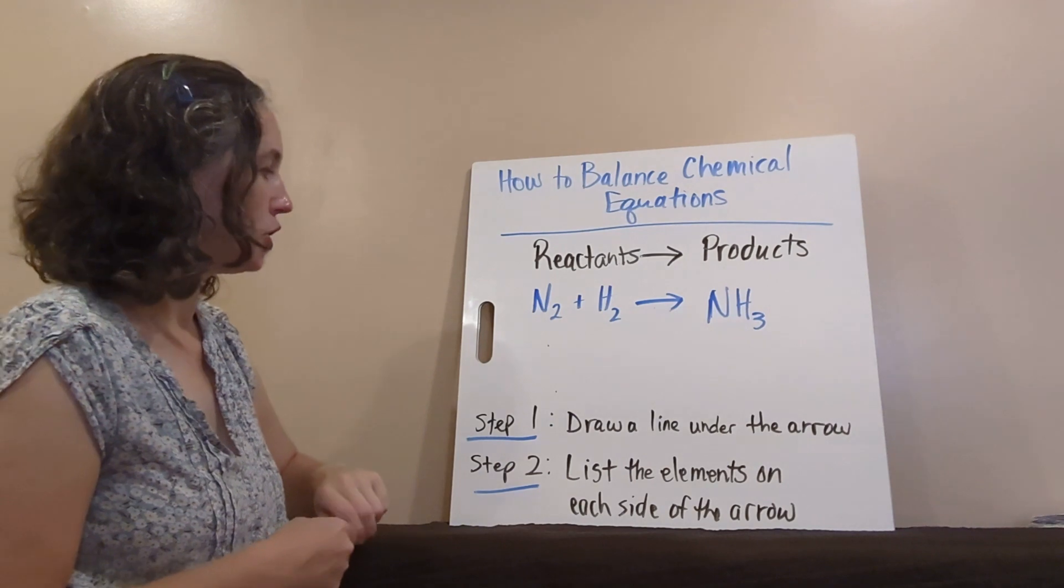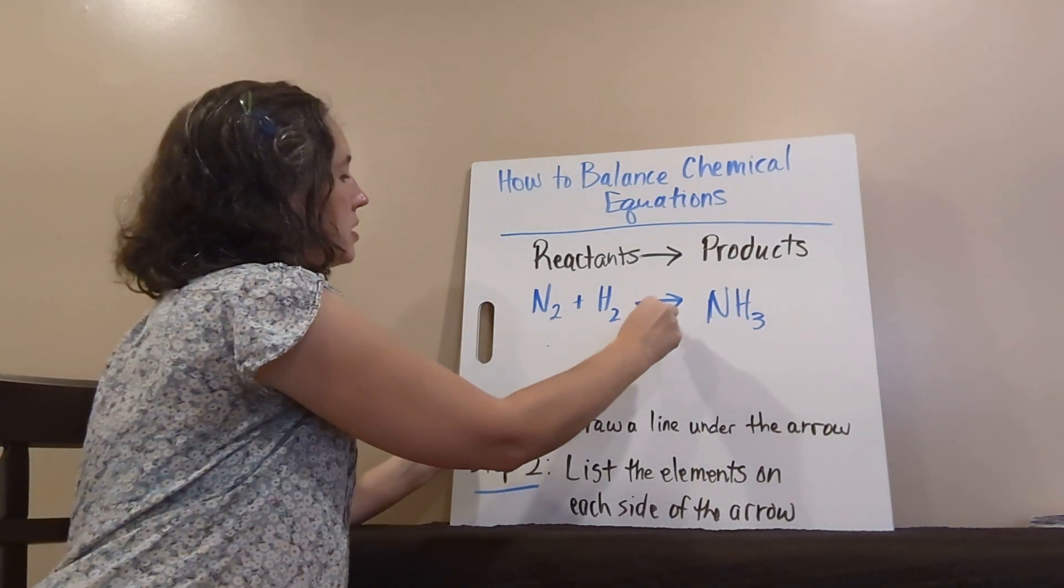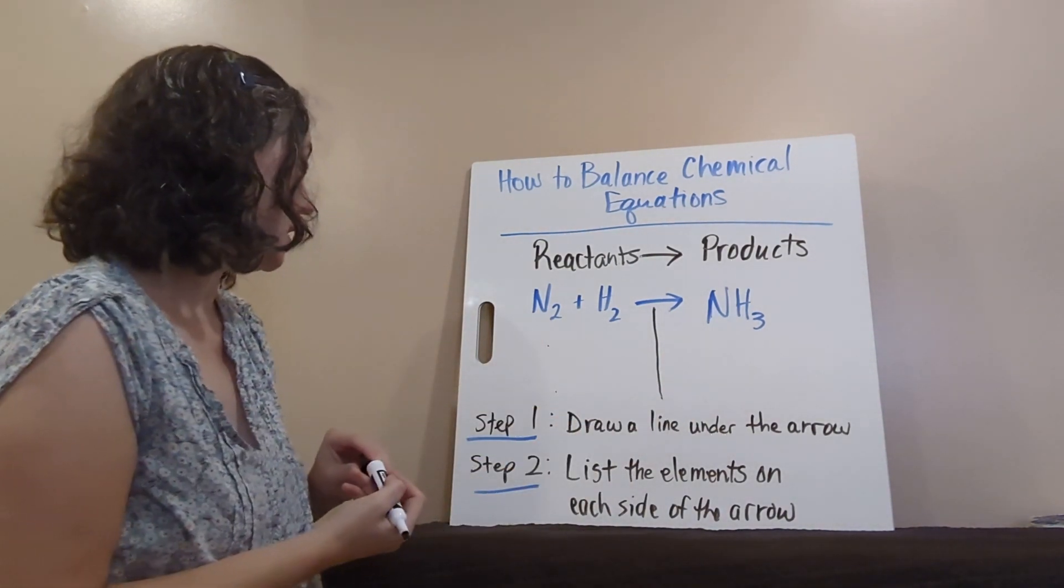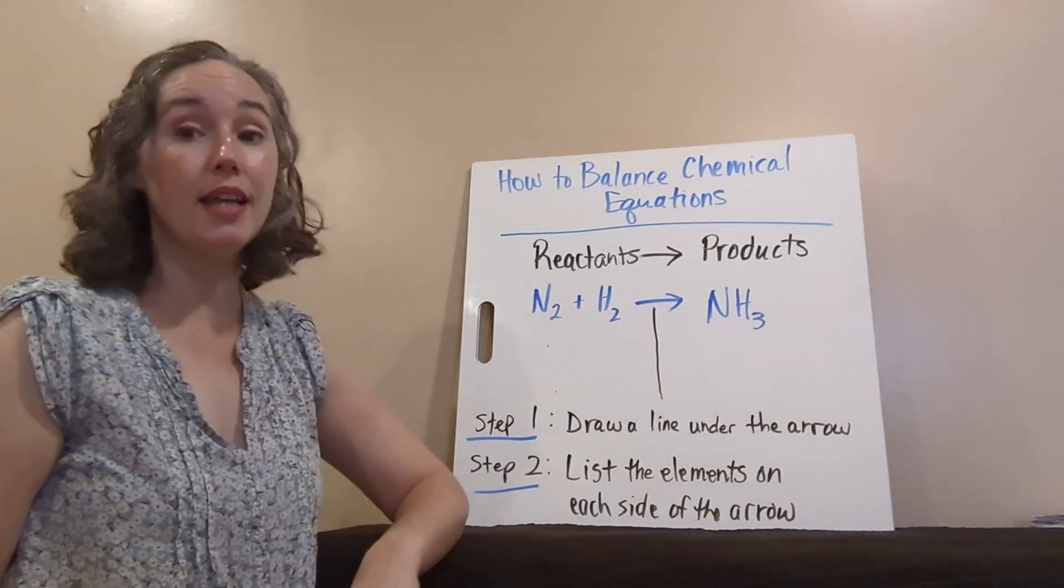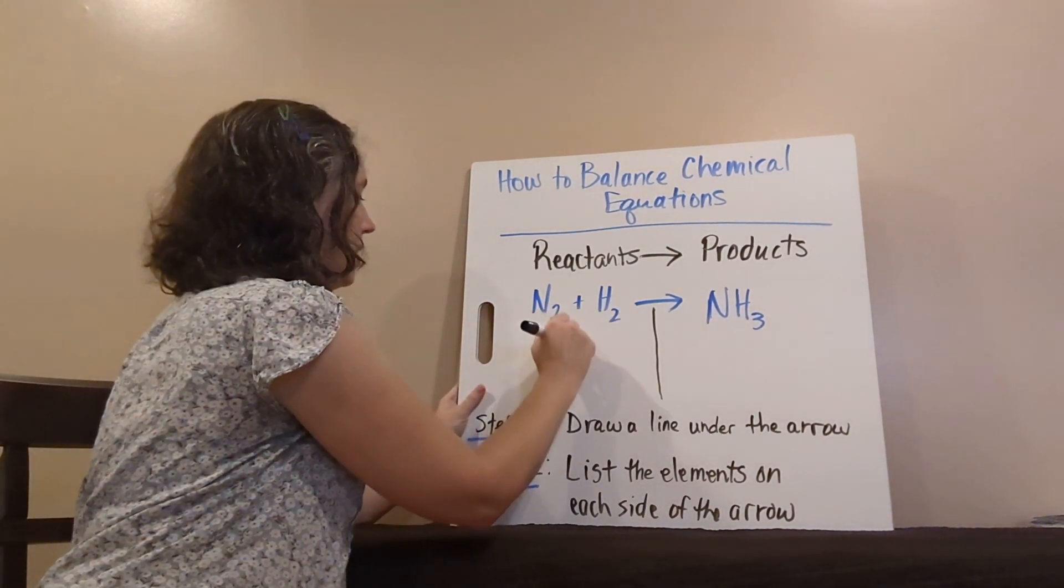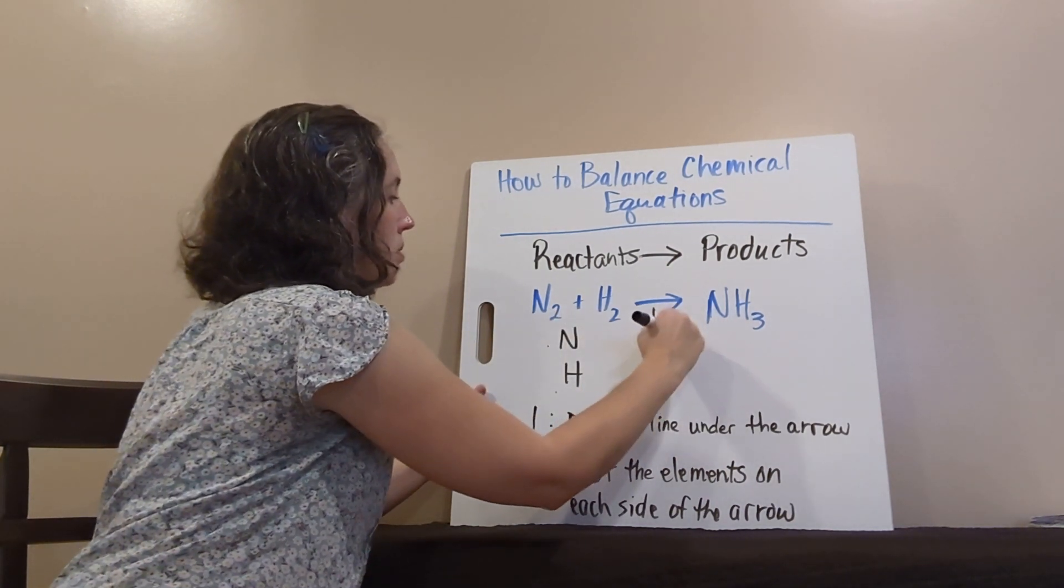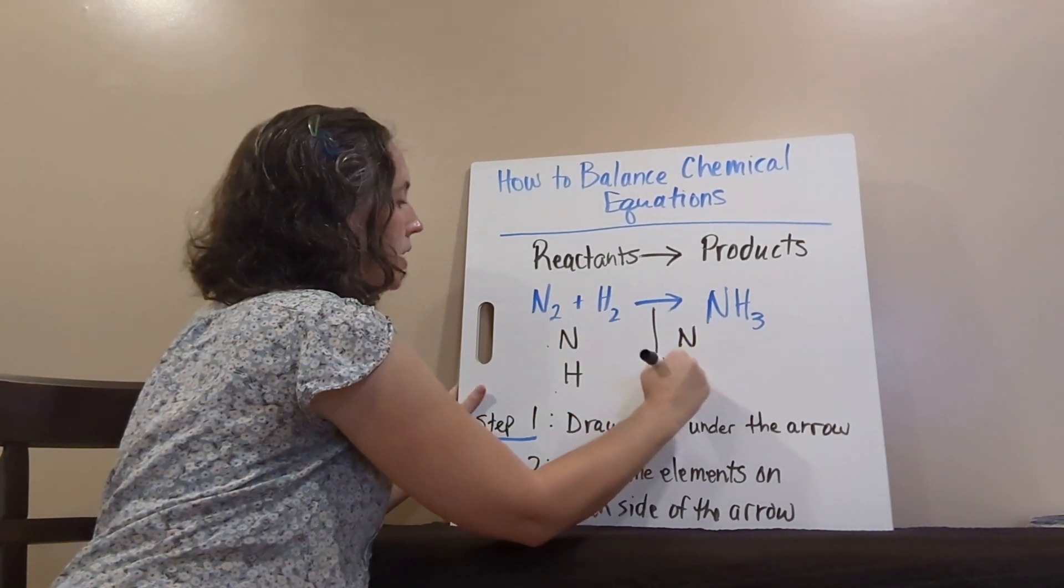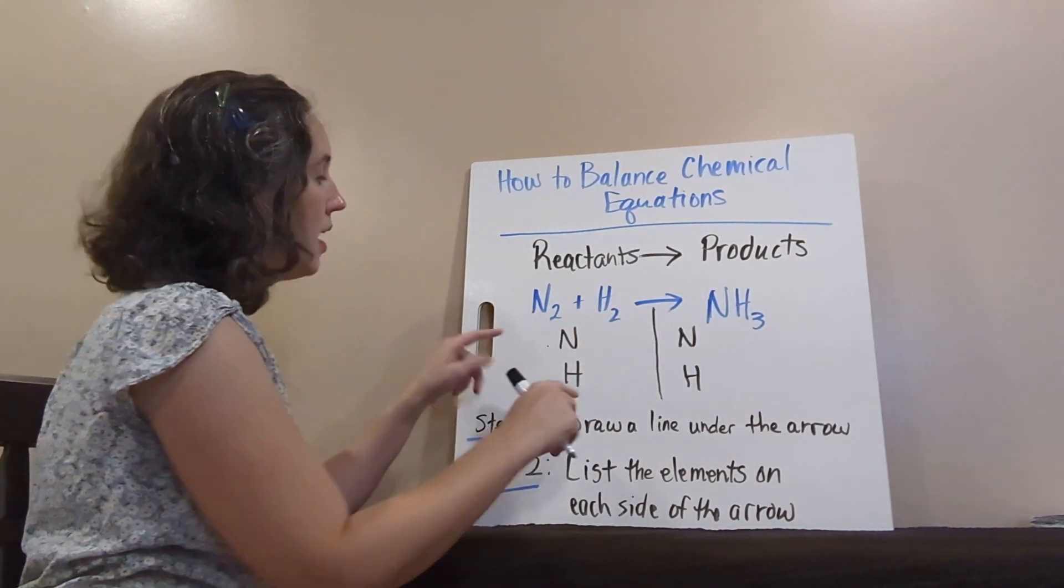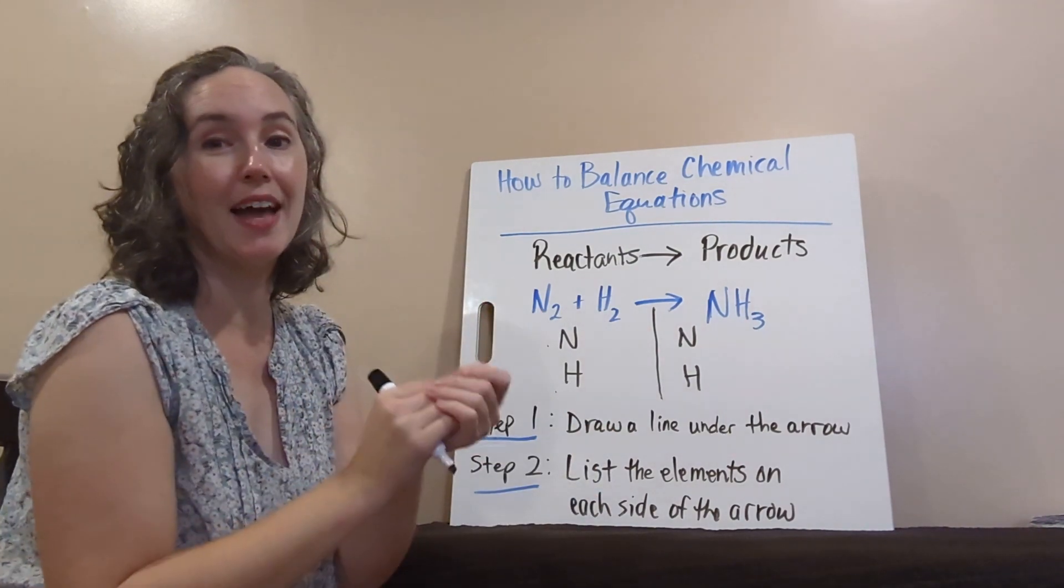Step one to balancing equations is to draw a line under the arrow. We're gonna do this to separate the reactant side from the product side. Step two, list the elements on each side of the arrow. N and H, and we've got the same here. Now, they don't always appear in the same order as you go across, but it helps to write the same element across from each other so you can see how they balance.